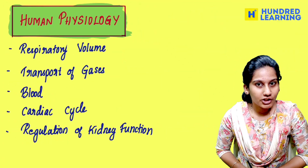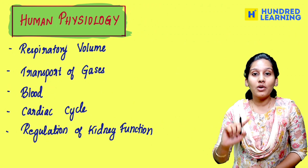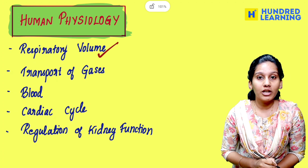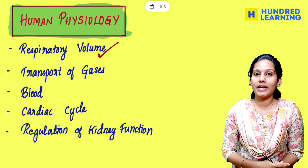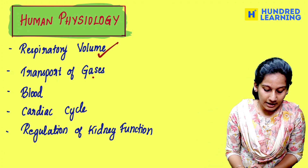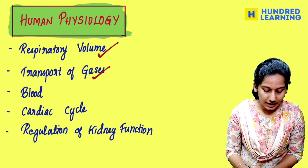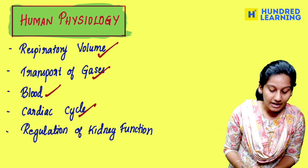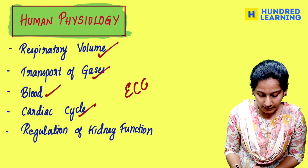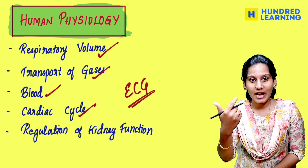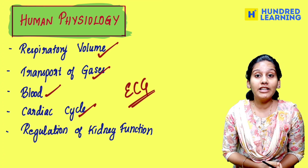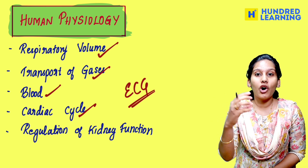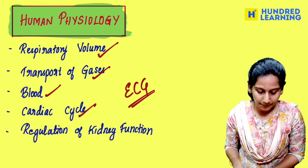You will find questions about human physiology — overall there are questions about disorders, so you will find all the disorders. And respiratory volume — we can calculate it, or definition. And transport of gases, exchange of gases, and blood. Cardiac cycle and ECG — ECG is quick, there is a small table you can revise. There is also a regulation of kidney function with a small table.